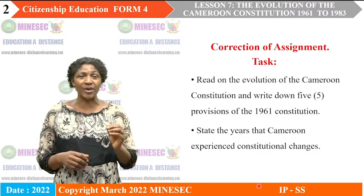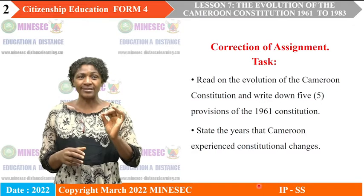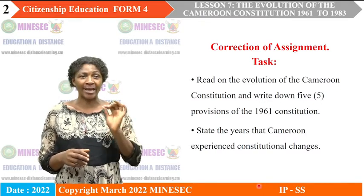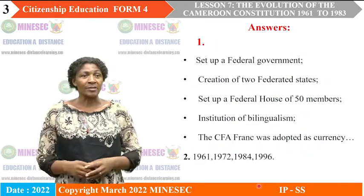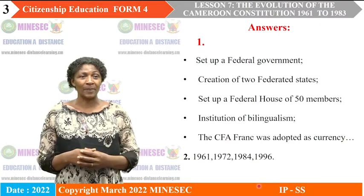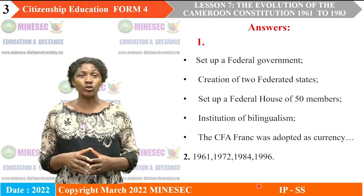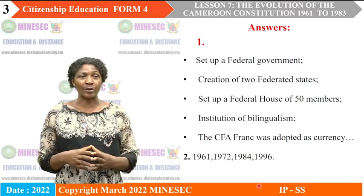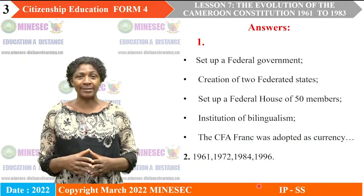A fifth provision was that the CFA Franc was adopted as the currency of the Federal Republic of Cameroon. The second task was to state the years that Cameroon experienced constitutional changes — note the word 'years' is plural. The years were: 1961, when they adopted the Federal Constitution; 1972, when they adopted the Unitary Constitution; 1984, when there were constitutional amendments; and the 1996 Constitution.